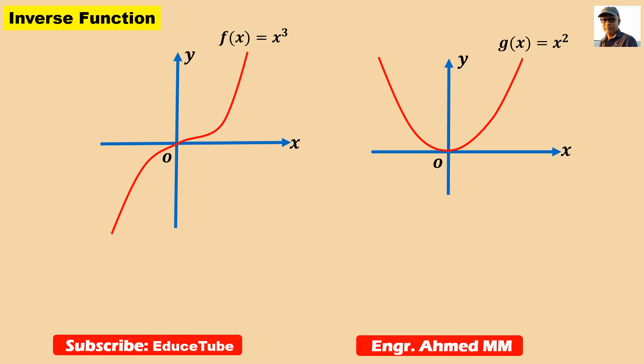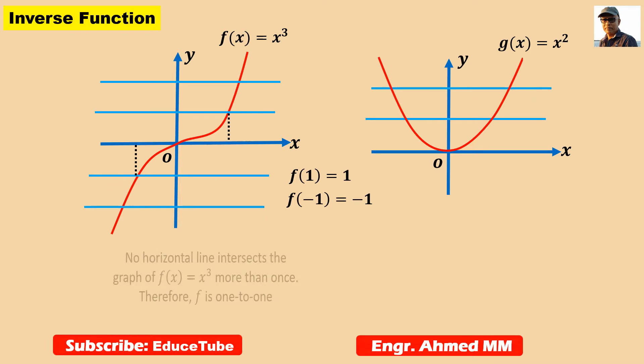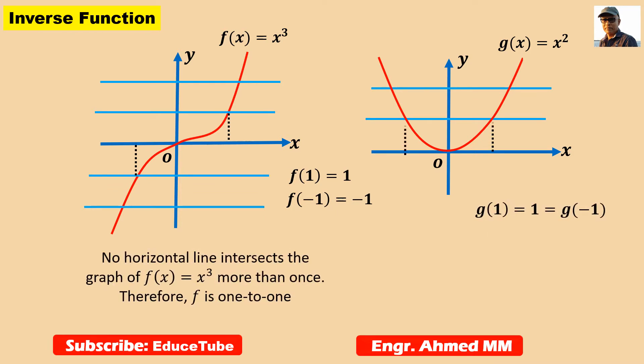First of all we need to know what is one to one function. A function is one to one if any horizontal line intersects its graph at only one point. So if we look at this graph, this horizontal line intersects this curve, the red line, everywhere at one intersection point. Here one, here one, everywhere it is one.